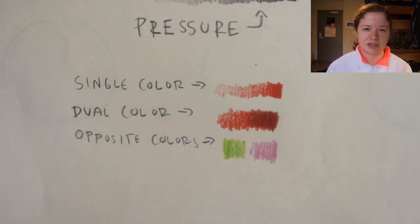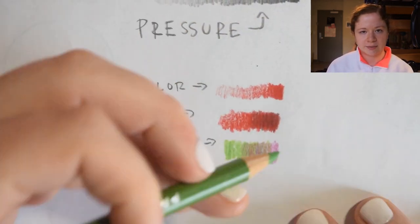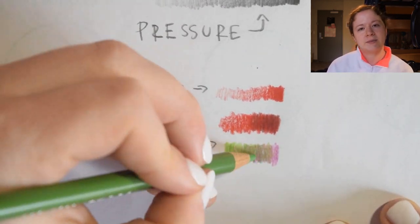Then for opposite colors, basically it just takes a lot of blending. So putting the two colors next to each other and then overlapping them in the middle and then slowly blending them out on each side.